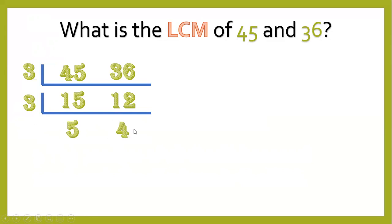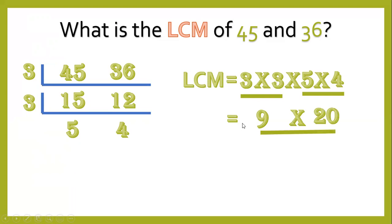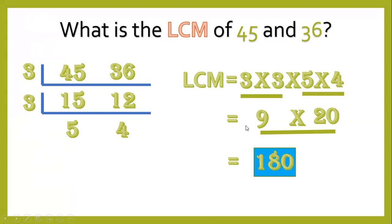5 and 4 have no more common factor. To get the LCM, multiply 3, 3, and the quotients 5 and 4. So LCM equals 3 times 3 times 5 times 4. 3 times 3 equals 9; 5 times 4 equals 20; 9 times 20 equals 180. So 180 is the final answer.